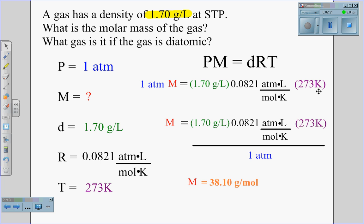And 273 Kelvin is the temperature. Following the algebra, we divide by 1 atmosphere on both sides, and we get 1.70 grams per liter times 0.0821 times 273 divided by 1 atmosphere.